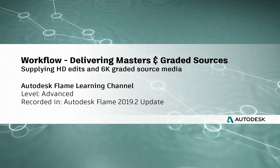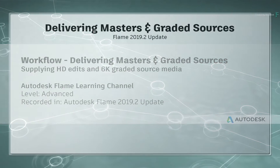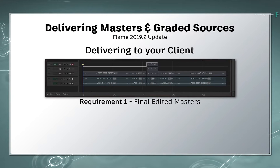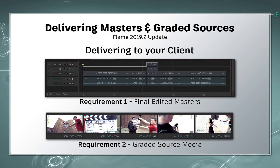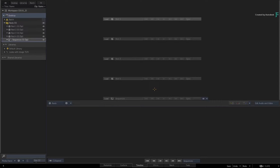Hi everyone, Grant for the Flame Learning Channel. In various post-production scenarios, versioning of an edited master is a big requirement for most production deliverables. However, another emerging requirement is not only do your clients want the final edited masters, but they also want the graded high-resolution sources in case any changes need to be made after the fact. In this video, you'll be covering a workflow that meets these requirements. This video is not footage specific, so please use your own material to follow along.